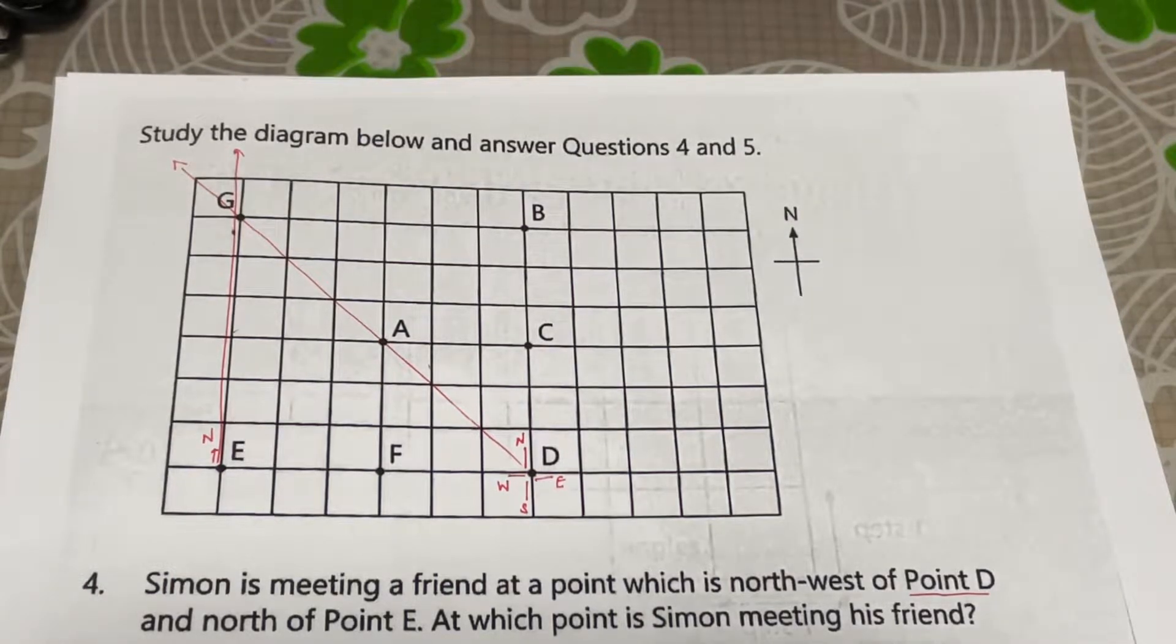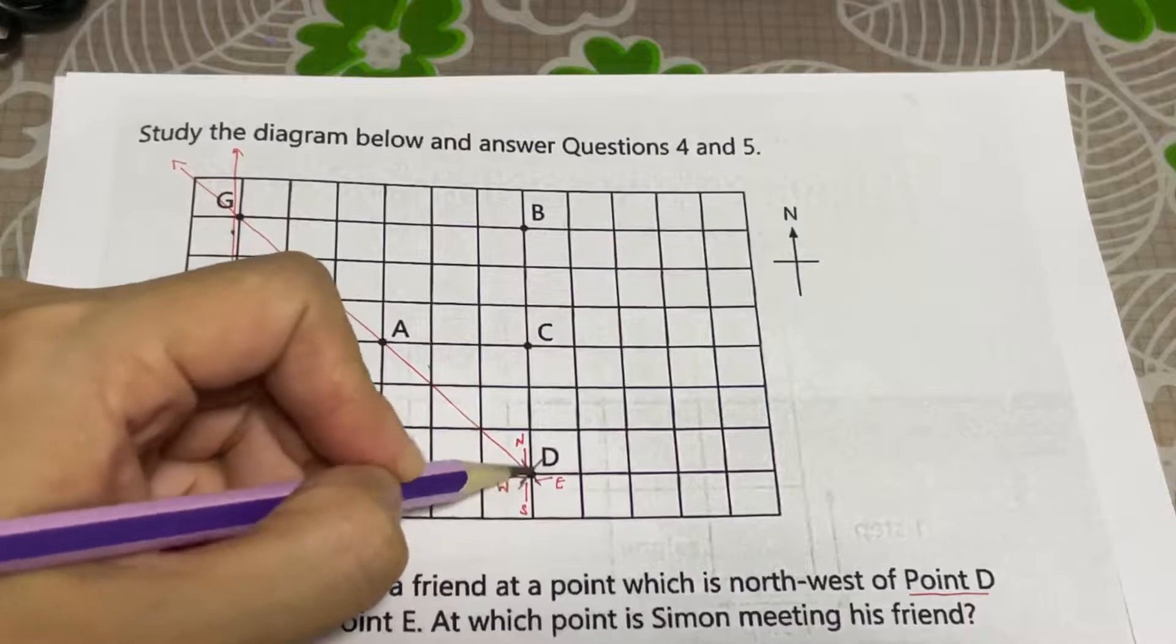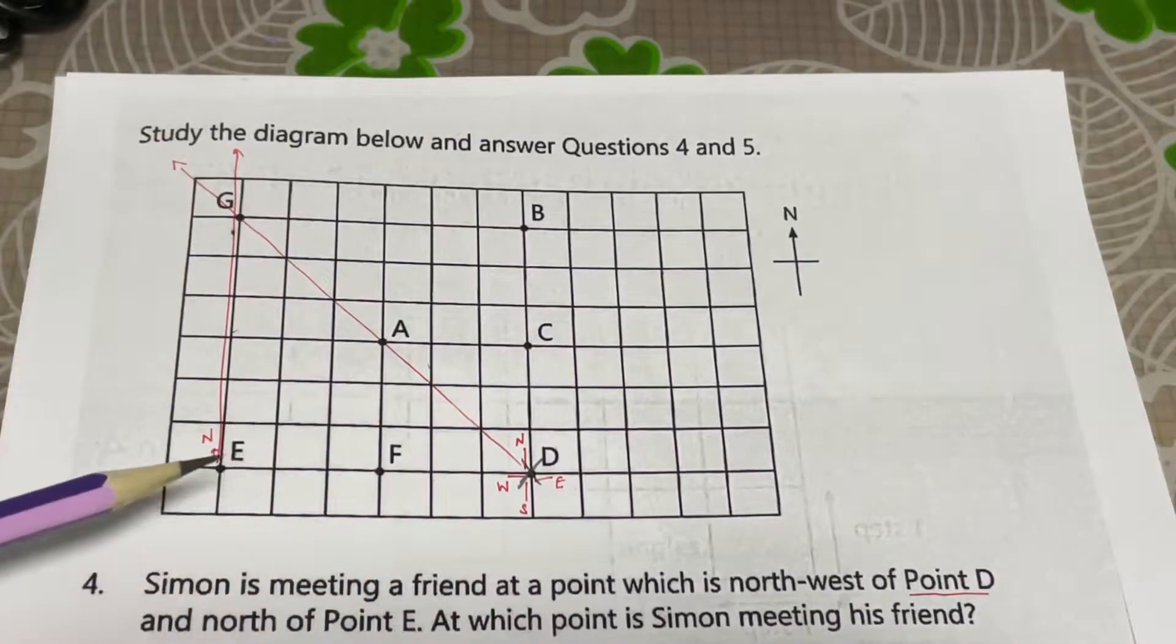Following that, let's consider to work out question 5. Hui Ling is at point D. So, Hui Ling is here. I'm going to use a pencil to mark across at where Hui Ling is.